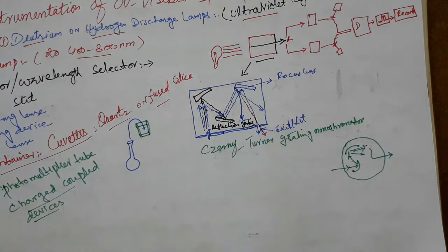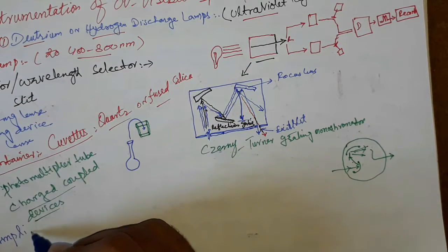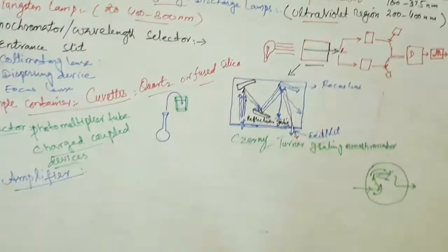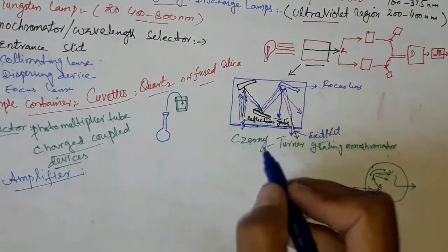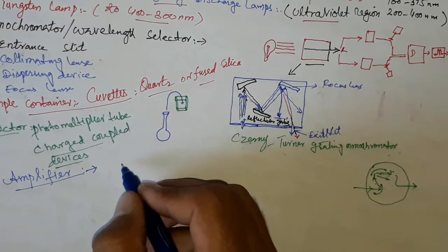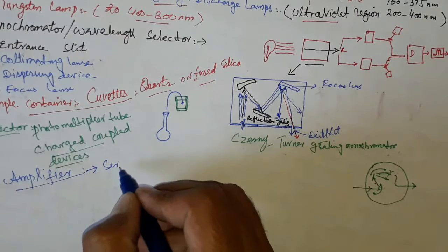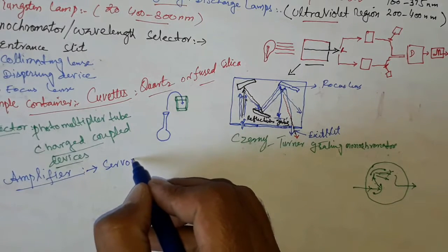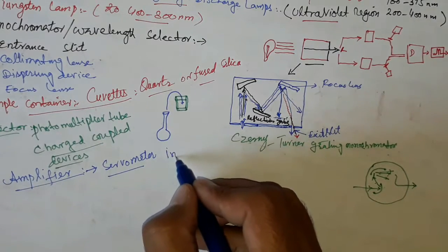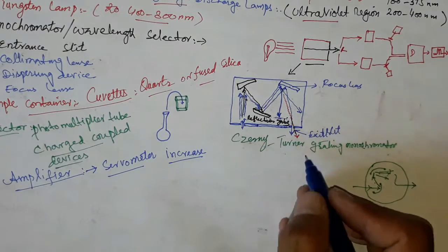The next component is the amplifier. The alternating current produced in the detector is of very low intensity, so it is directed into the amplifier, which acts as a servo meter and amplifies or increases the intensity of the alternating current so that it can be easily recorded by the recorder.